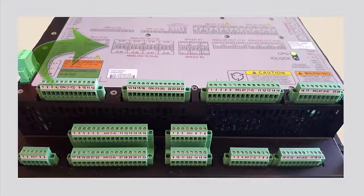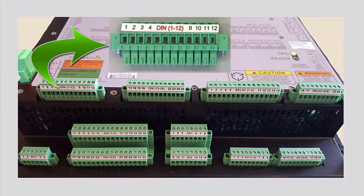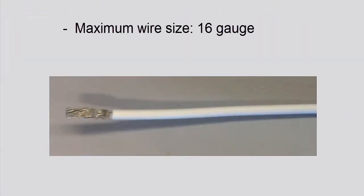You should remove the terminal blocks from the controller before connecting wires to them. The terminal blocks will accept a maximum wire size of 16 gauge.